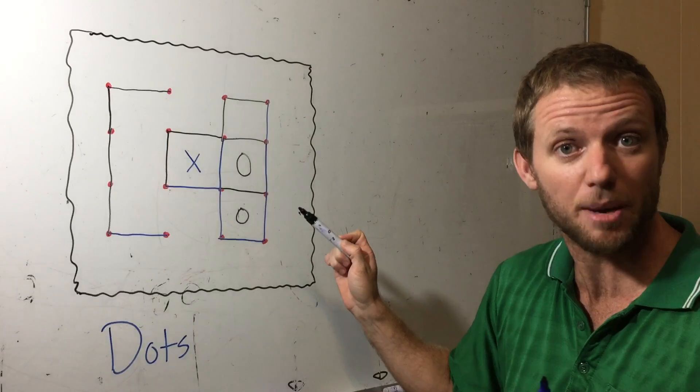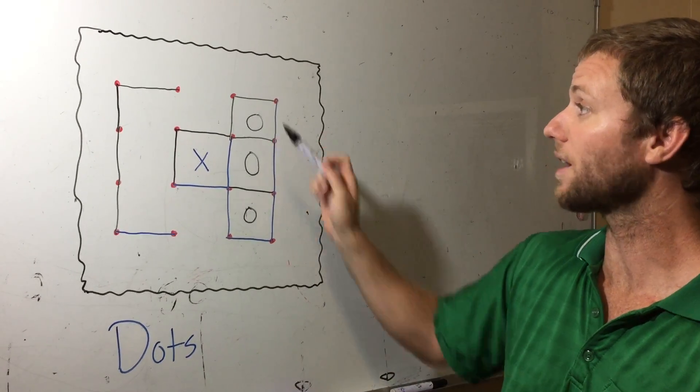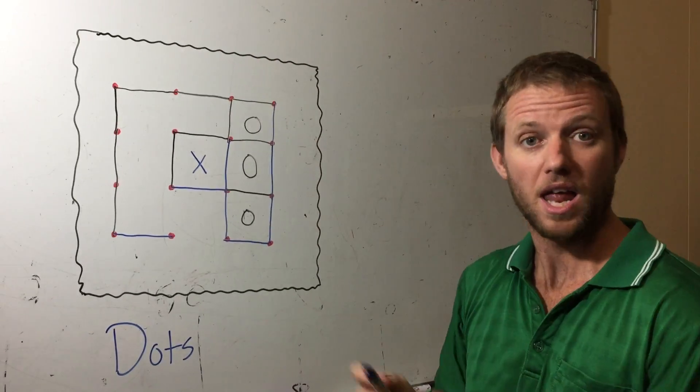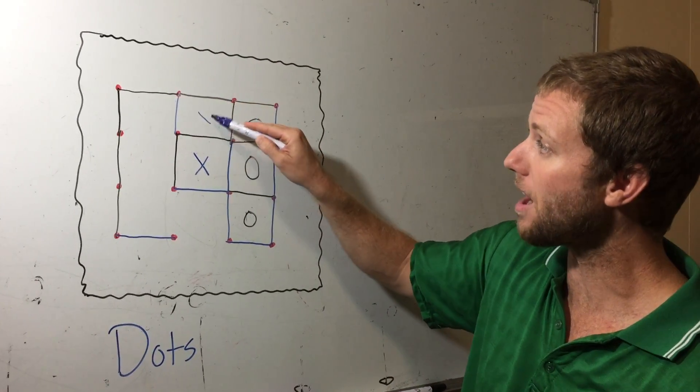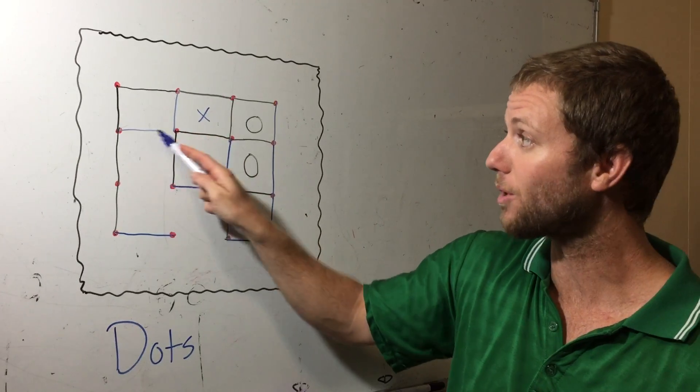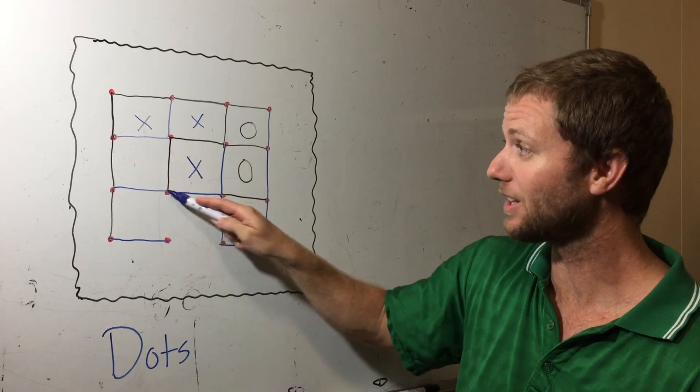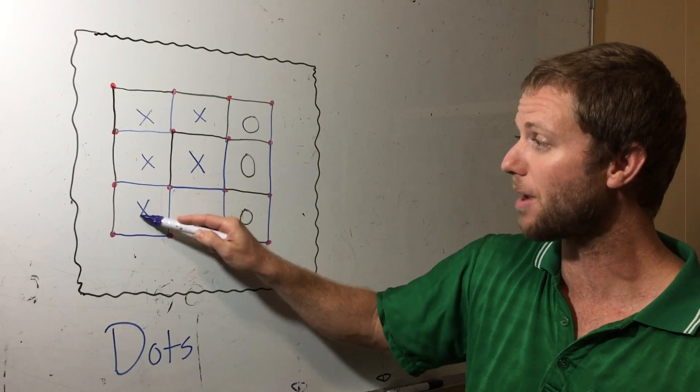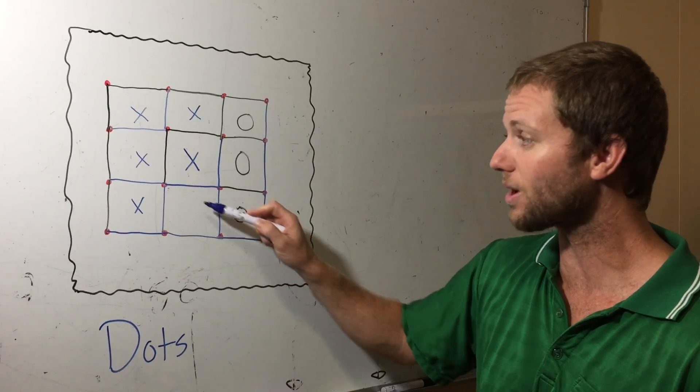Black needs to go one more time. Now blue can close the box, and go one more time, and close the box, and go one more time, and close the box, and go one more time.